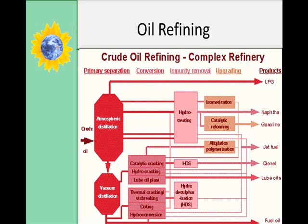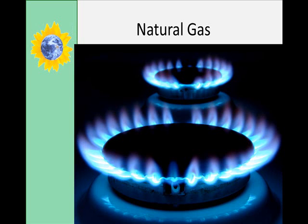Natural gas is a component of coal and oil formation. It's used in industrial and commercial heating and cooking, and increasingly to fuel electricity generation. In compressed form, natural gas can also be used as a transportation fuel. Natural gas is either found mixed in oil or is released from coal. The energy in 6,000 cubic feet of natural gas is equivalent to one barrel of oil. The U.S. consumed 19.7 million cubic feet of natural gas in 1999, nearly all of which came from domestic production.